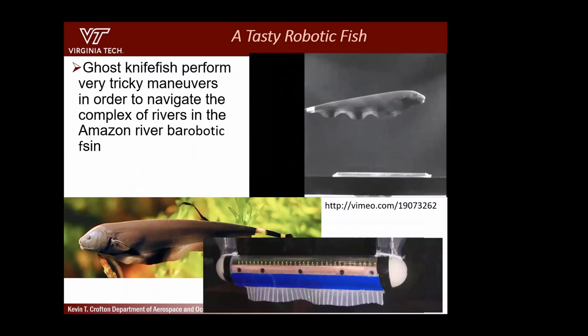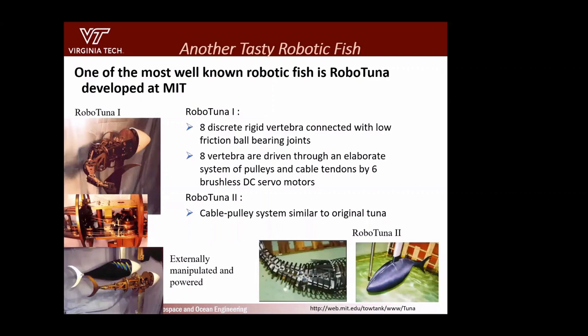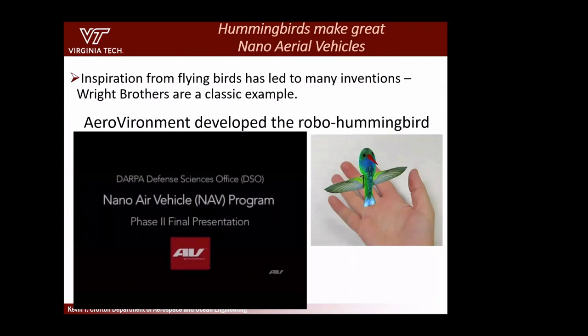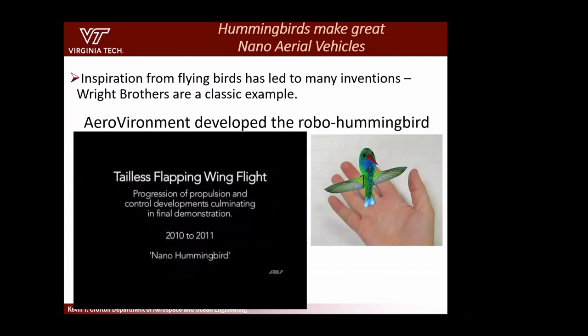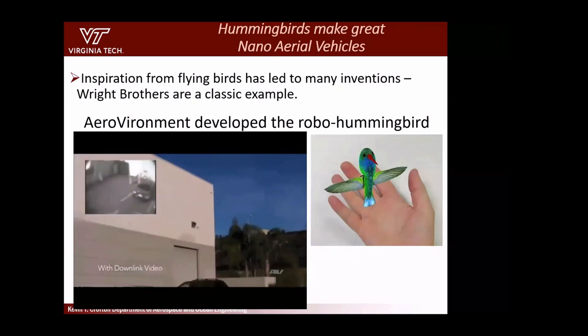People come up with all kinds of robotic designs inspired by fish. There's a robotic knife fish that does undulations by controlling wave propagation along its bottom fin. MIT has the RoboTuna, very well known, using actuators, muscles, and skeletons. DARPA funded a project inspired by hummingbird flight — hummingbirds have a unique way of flapping their wings, and this company developed a vehicle that flies just like a hummingbird.